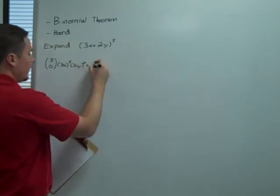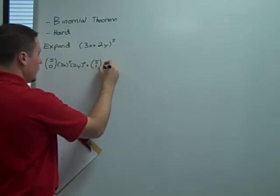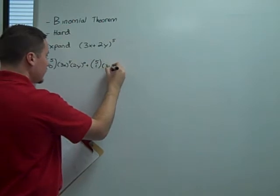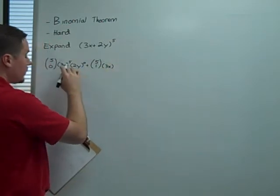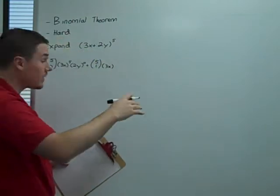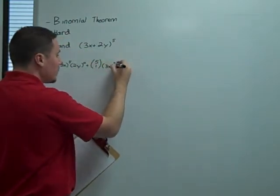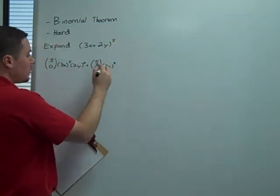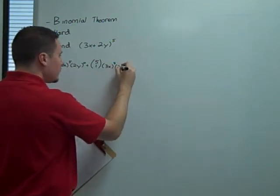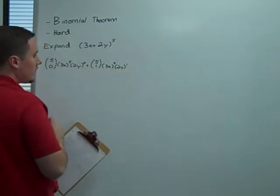Then I'm going to add 5 choose 1 times 3x raised to 1 less power, because again, the 3x terms are descending. And I can just do 5 minus 1 gives me 4. And then the 2y makes its first actual appearance, being raised to the first. Again, the 1 is matched there.